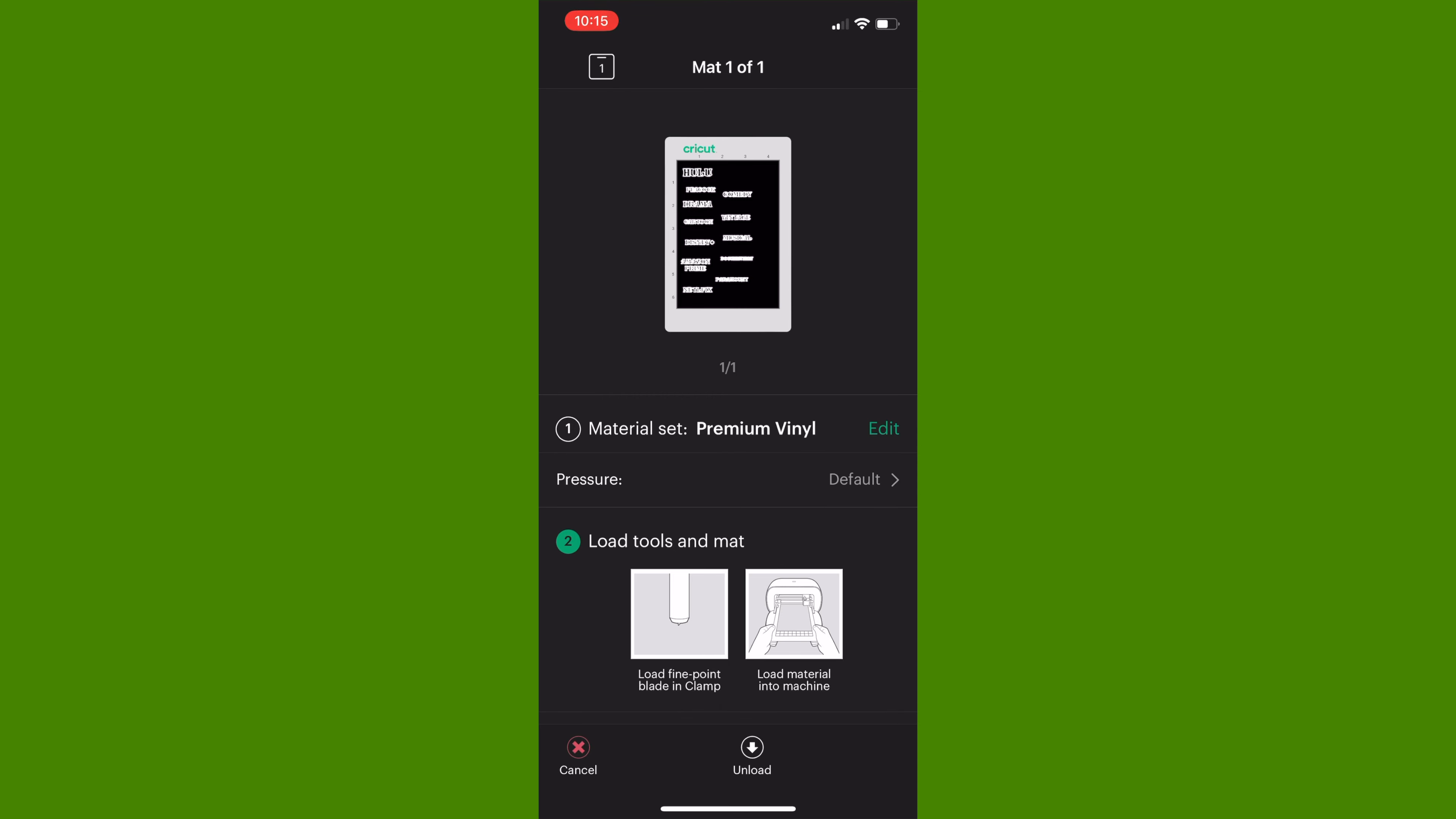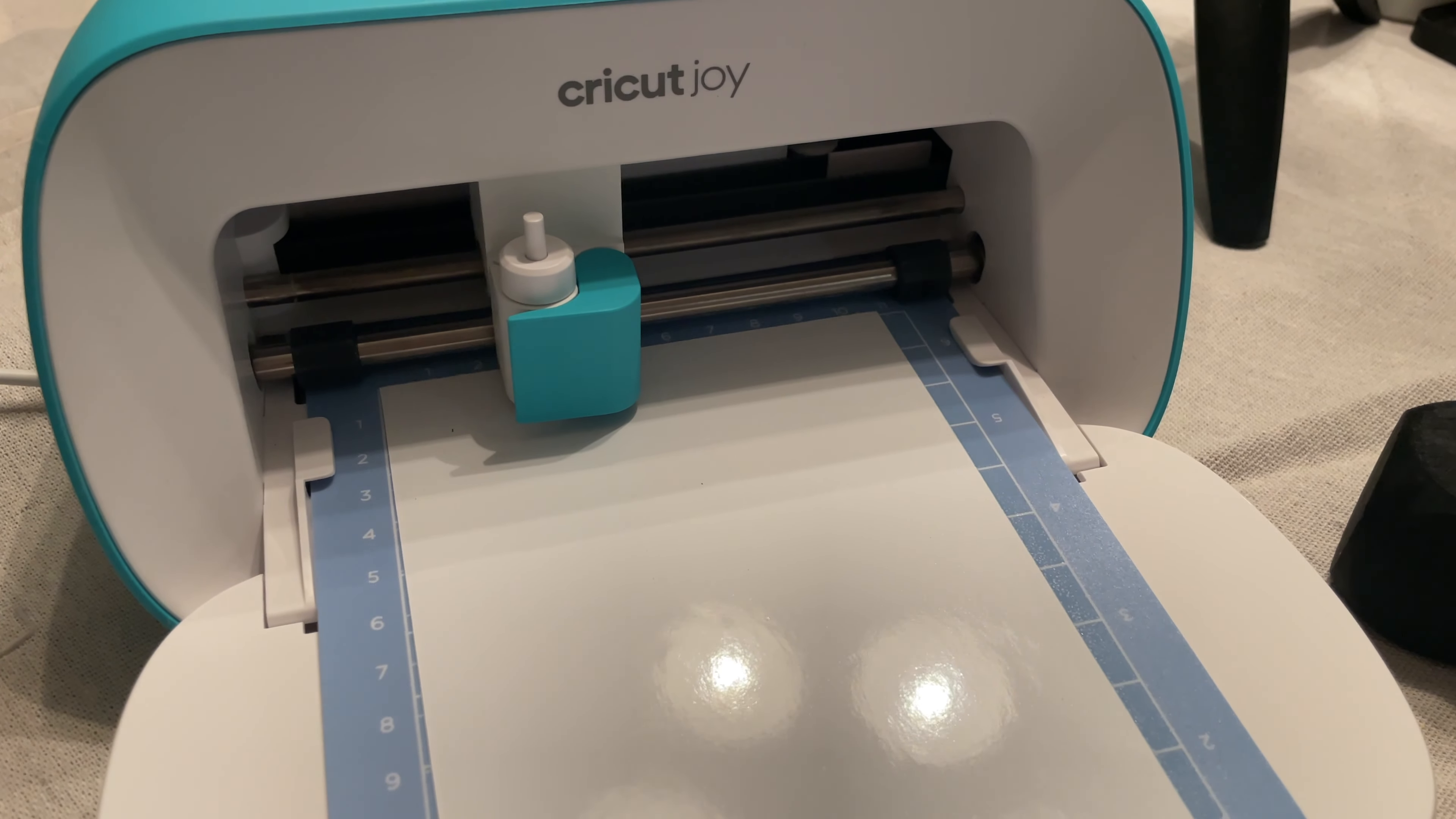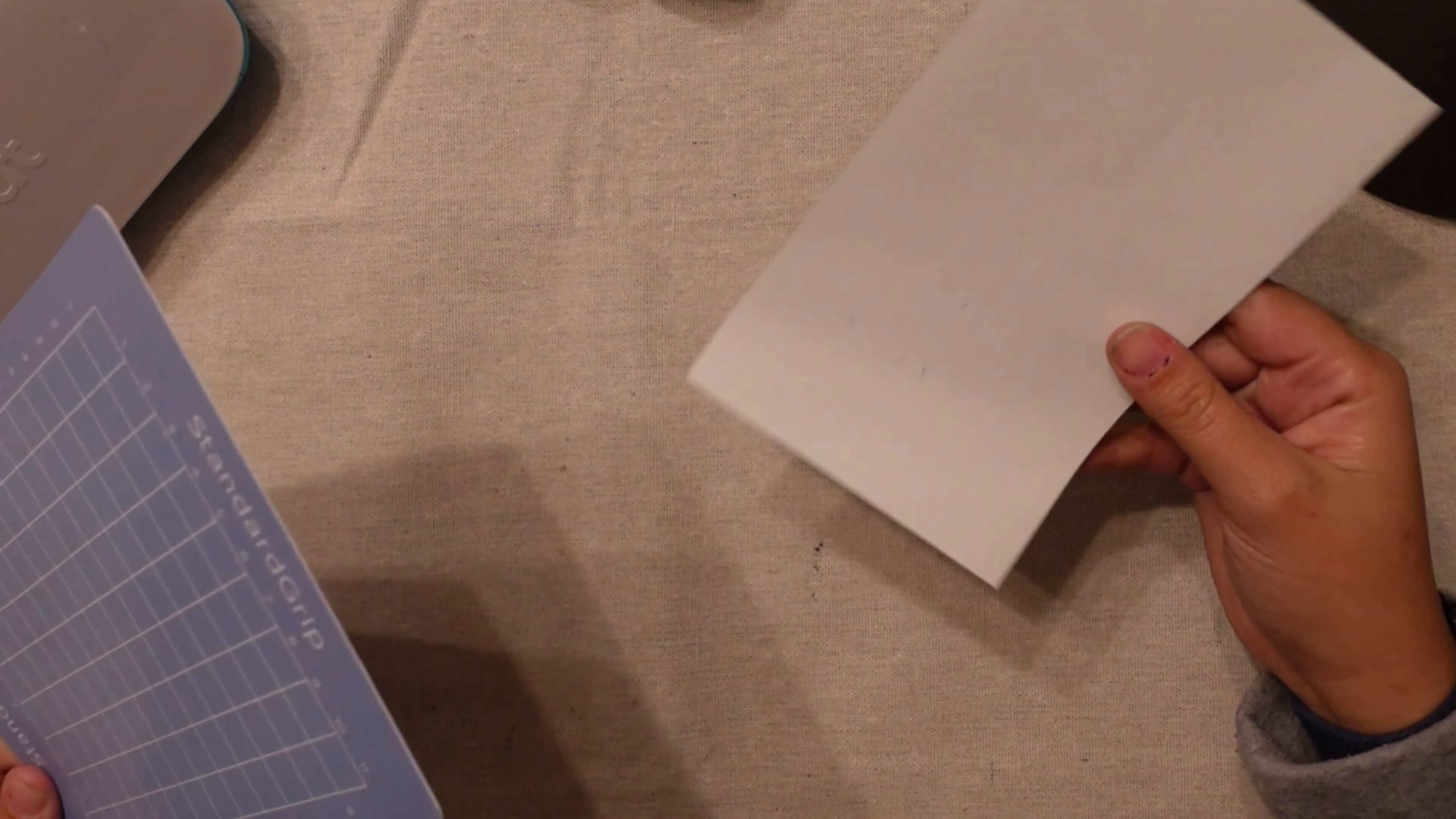I'm going to click Make It. I am using a mat, so I'm going to hit the four and a half by six and a half inch mats, hit confirm, and then I want to space these out a little bit just so we have no issues and there's plenty of space between each word. Now we can hit next, select our accessory, and it's going to look for the Bluetooth for the Cricut Joy. Now we can select the Joy, choose our material - I'm just going to go with the premium vinyl setting - and load in our mats. Now we can hit go.